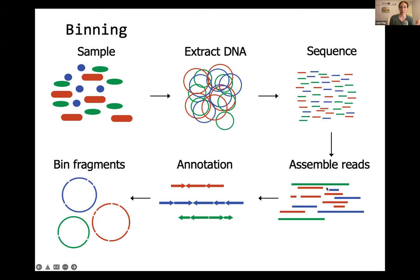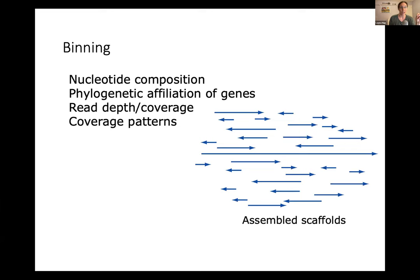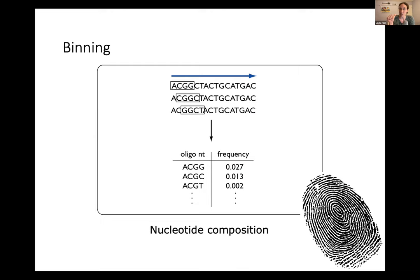There are a number of different characteristics of assembled data that we can use to create these bins. We're going to go over the most commonly used — they're mostly all used in combination. In this example, we're walking through this set of scaffolds and we would like to use information embedded in these scaffolds to identify which of these putatively came from the same original population. The four main ways we do this are: nucleotide composition, phylogenetic affiliation of genes, read depth or coverage, and coverage patterns.